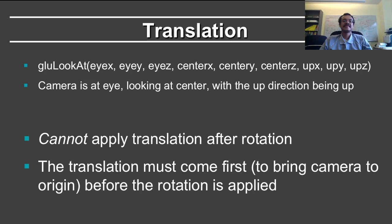First, the camera is looking down the minus z axis. It's moved to the appropriate location in the world. So you have to apply the inverse translation to the world. And then it's positioned appropriately which corresponds to the rotation. So the translation must come first to bring the camera to the origin before the rotation is applied.